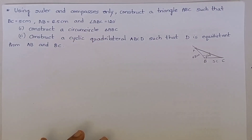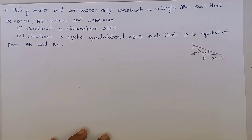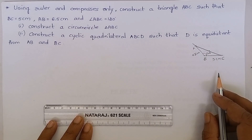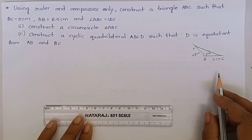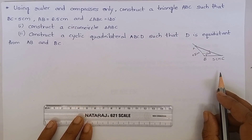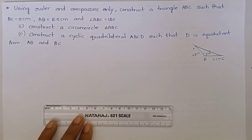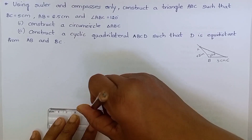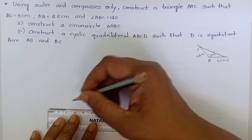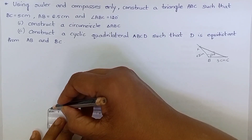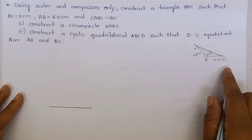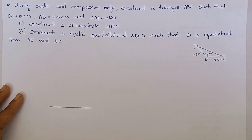Let's start the construction. BC is 5 cm. Measure 5 cm using the ruler. BC is 5 cm.